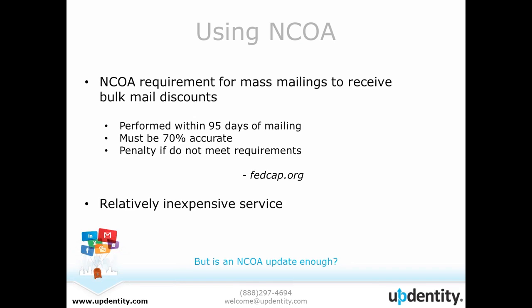FACAP.org provided some statistics about the requirements for using NCOA: it must be performed within 95 days of mailing, it must be 70% accurate, and if you don't meet those requirements, you could face a penalty. The nice thing about NCOA is that it's a relatively inexpensive service. You may be sending out mailers to like 5,000 individuals, and it may be cost-effective for your organization. If you're going to be sending out a large pamphlet, it's really important to know if the addresses you have are up to date before you send out all of those mailers. The question is: is just doing the NCOA update enough?